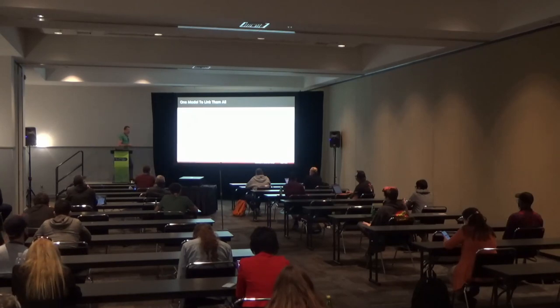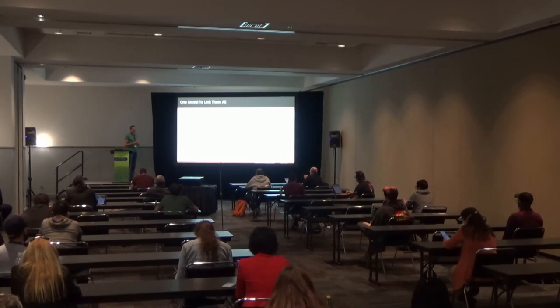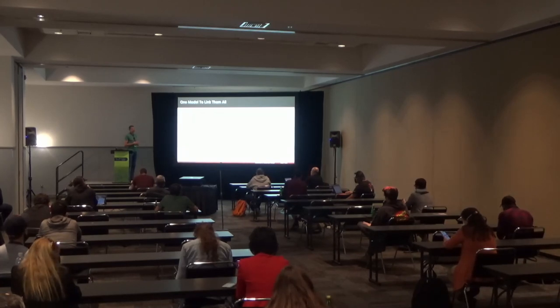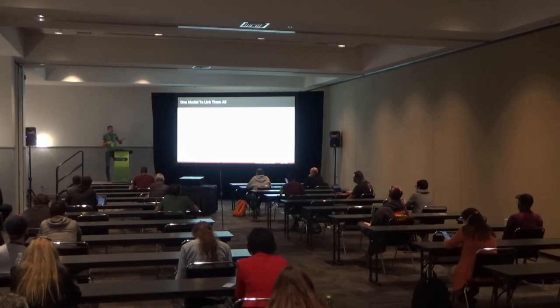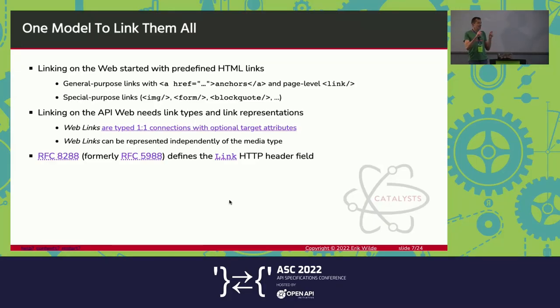Regarding OpenAPI — these things are at a different level. If you use link sets in an OpenAPI-described API, it would just be the content that a certain endpoint is serving. You could come up with a schema for it or provide examples. At the API level, it would just be another resource in OpenAPI — only this resource happens to contain links.